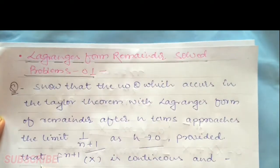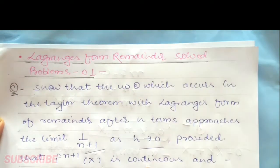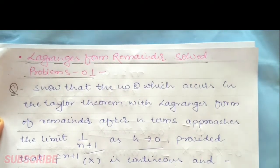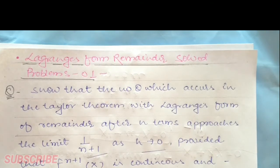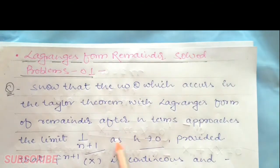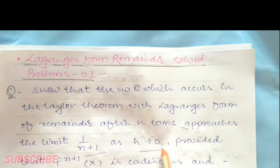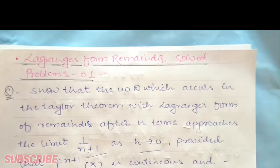Provided that f^(n+1)(x) is continuous and differentiable from 0, and x is discussed up to a. In these conditions we have to show this — when h approaches 0, we need to prove this.